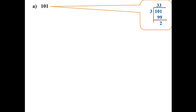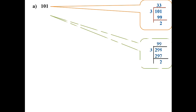For the last number: checking 299 by dividing by 3 — 99 threes are 297, and the remainder is again 2. So the last number in this sequence is 299.